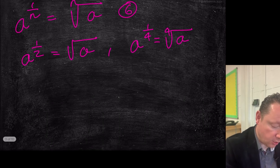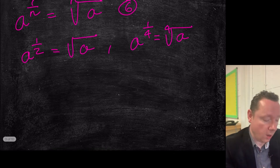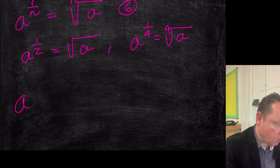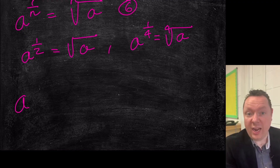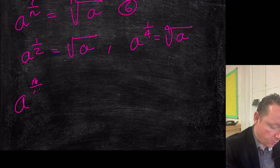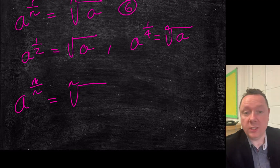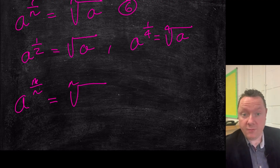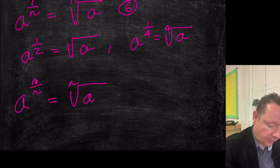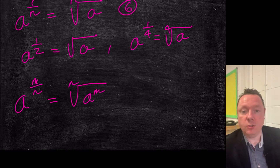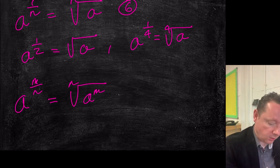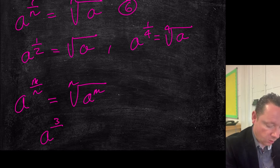And then taking any fraction — in other words, when the number on top is not one — let's say a to the power of m over n. Then we can write that as the nth root of a to the m; the denominator is the root, and the a to the m just comes along for the ride. For example, a to the power of three quarters would be the fourth root of a cubed.